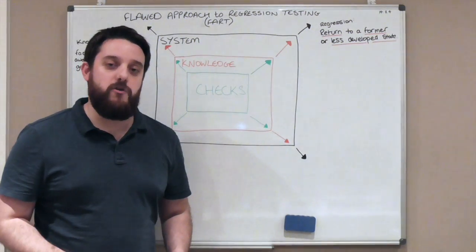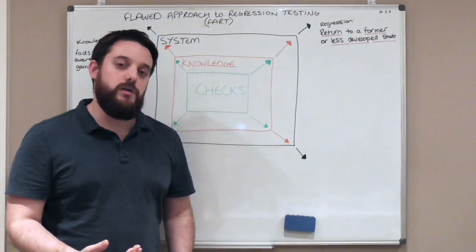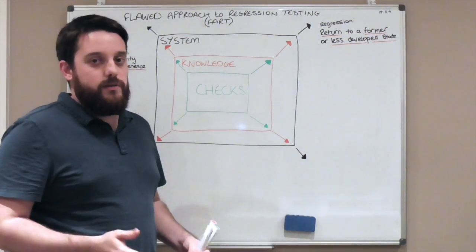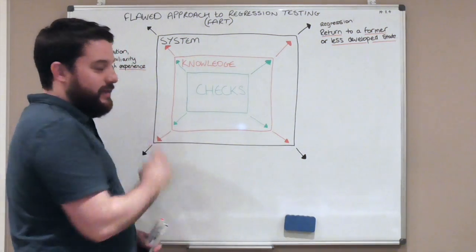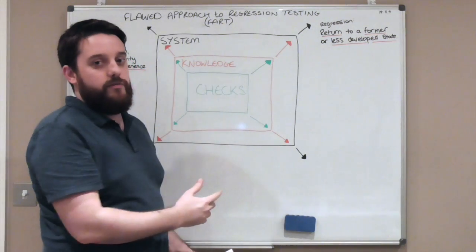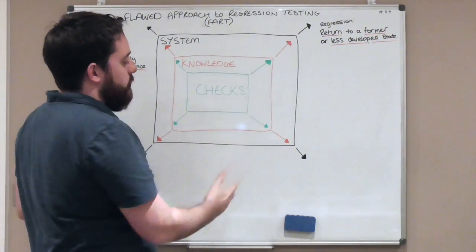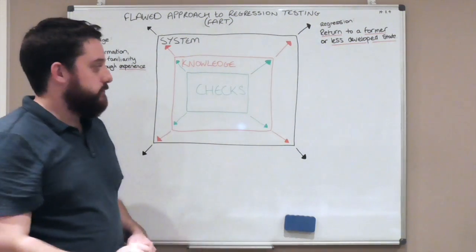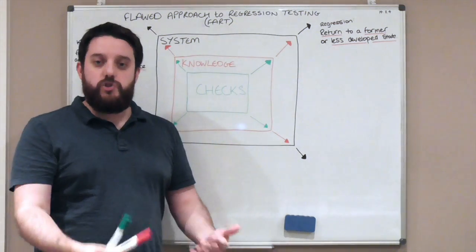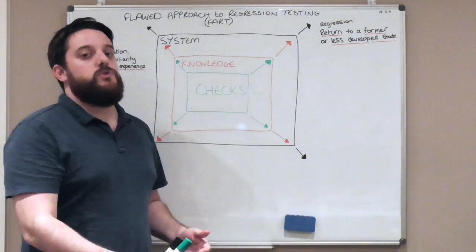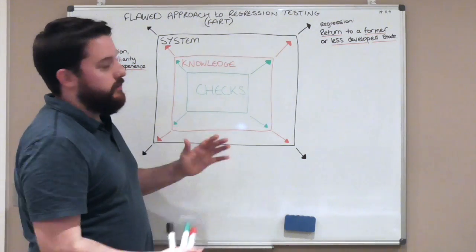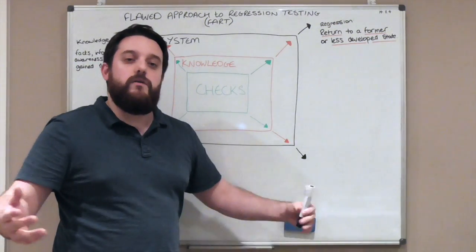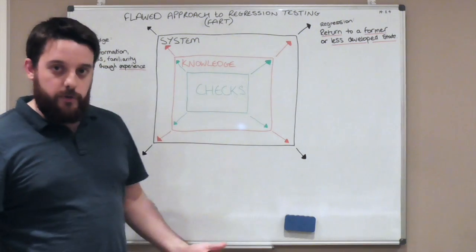This is some people's approach to regression testing, mainly the people who say we can automate our regression testing, or tool vendors that tell you you can automate your regression testing. People go, yeah, 100% of our regression testing is automated. I want to try and pick holes in that and tell you why it's flawed. For that to be the case, the knowledge that you think you have has to stay the same. As your system gets bigger, your knowledge gets bigger, your checks get bigger, and it just continues to grow.